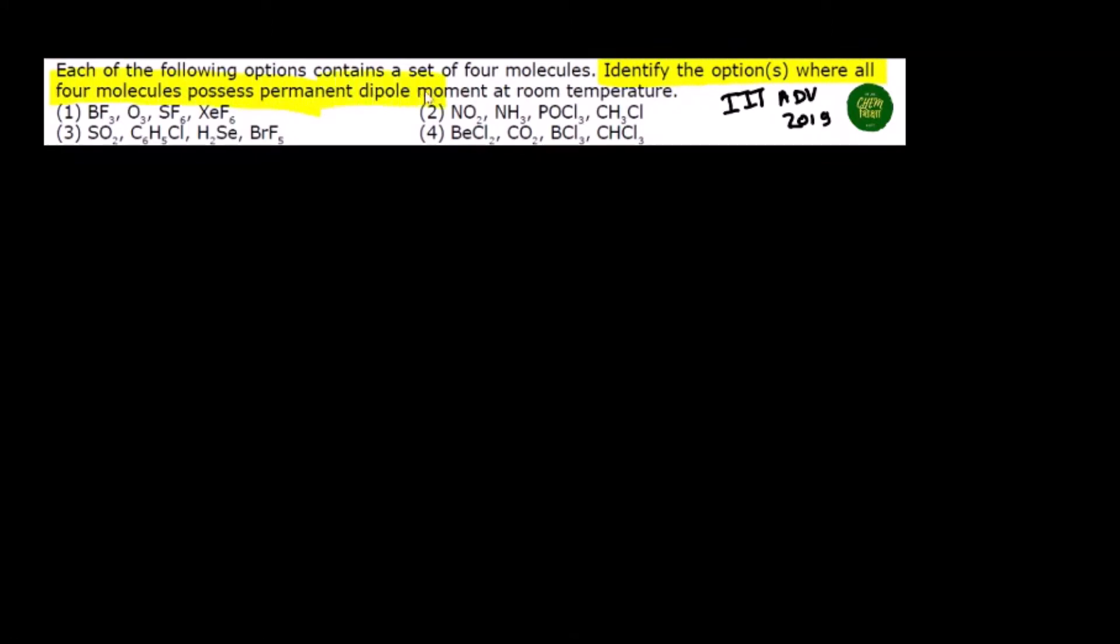You need to choose the option where all four species listed have some dipole moment that doesn't cancel out to zero. If even one molecule in an option has a dipole moment of zero, we can eliminate that option.